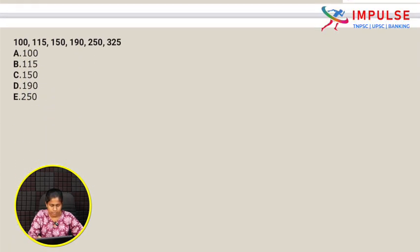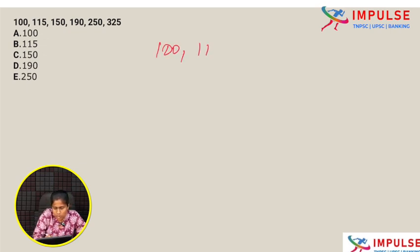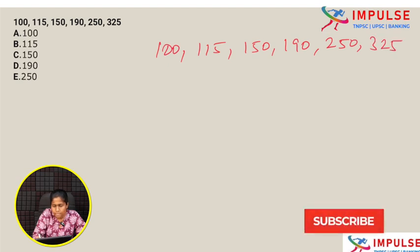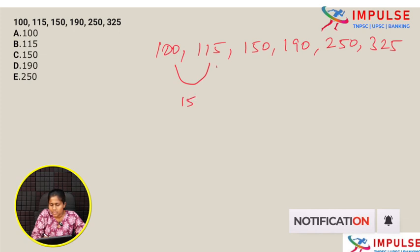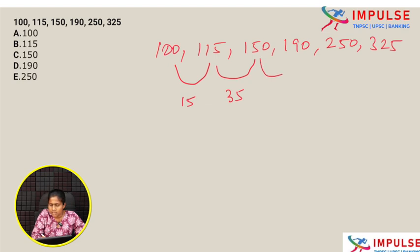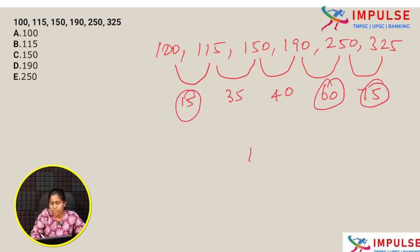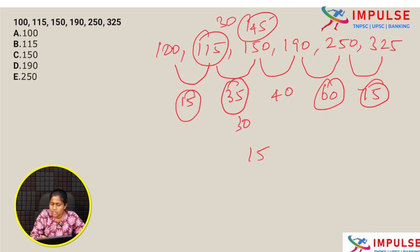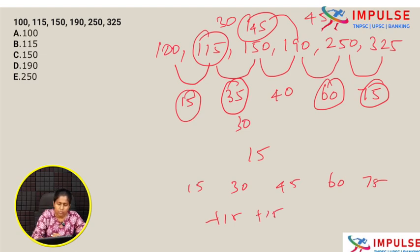Next series: 100, 115, 150, 190, 250, 325. Differences: 15, 35, 40, 60, 75. Looking at the pattern — differences should be 15, 30, 45, 60, 75. So the third number should be 100 plus 15 plus 30 equals 145, not 150. The wrong number is 150. Option C.